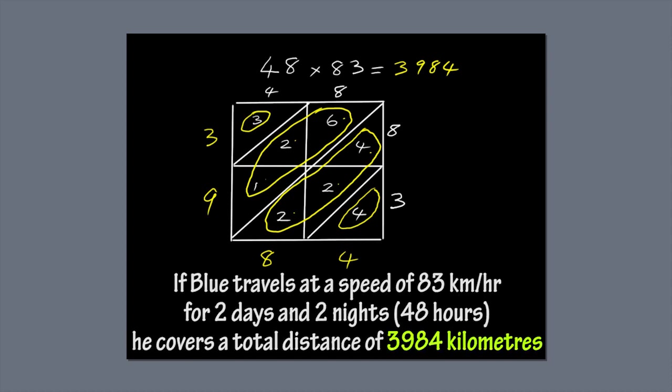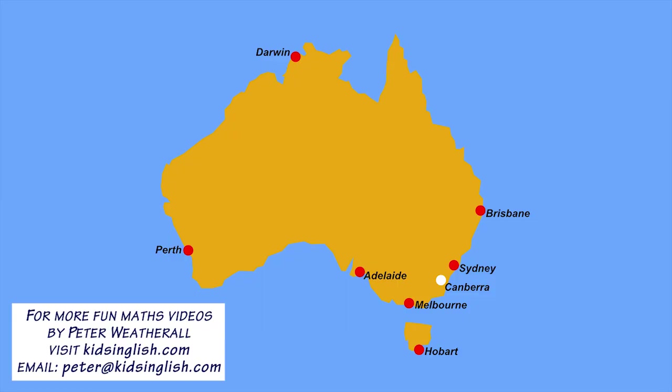So, if Blue travels 83 kilometres an hour for two days and two nights, he covers a total distance of 3,984 kilometres. That's almost the distance between Sydney and Perth. Now, that's a long trip, isn't it?